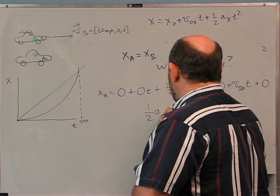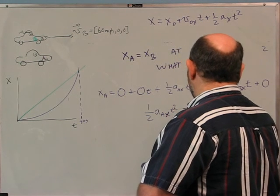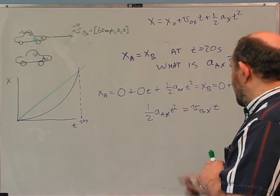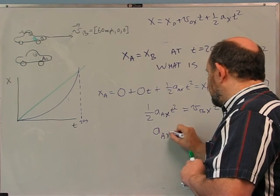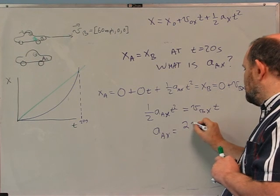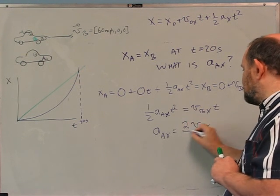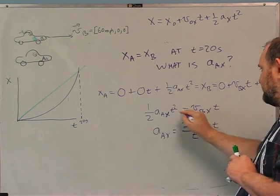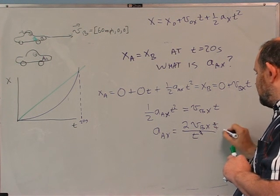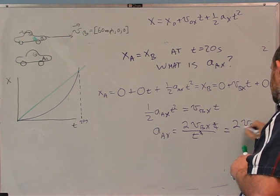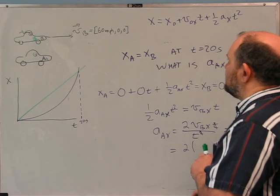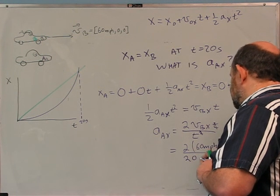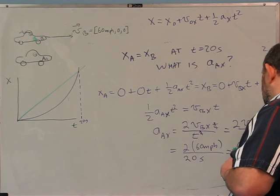So aAx = 2·vBx / t = 2 × 60 mph / 20 s = 6 miles per hour per second. That's the acceleration needed. Note that after 20 seconds I'll be going at 120 miles per hour.